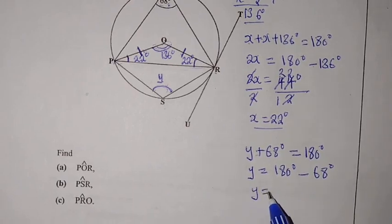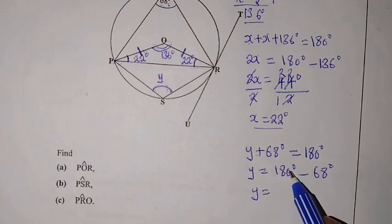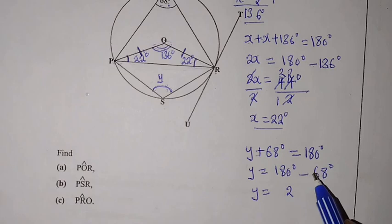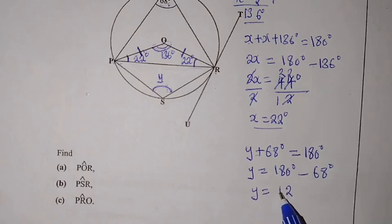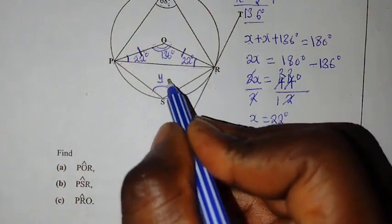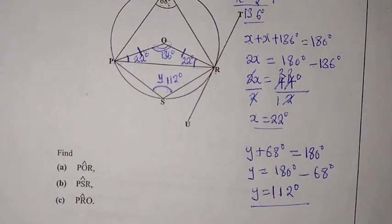So Y equal to 0 minus 8. It can't you borrow a 1 from 8. This would be a 10 minus 8. It's a 2. We remain with a 7 minus 6. It's a 1. Then there is this one here. So this will give us Y is equal to 100 and 12. Meaning that here we have 112 degrees.